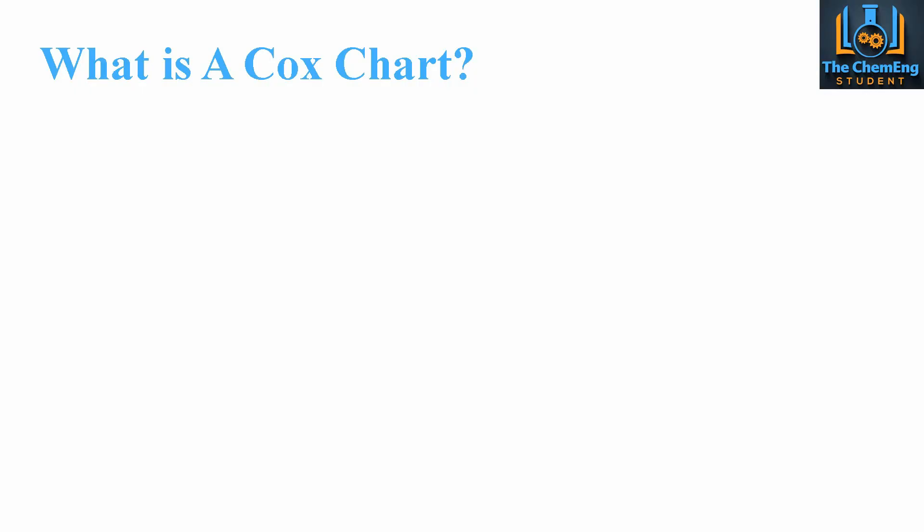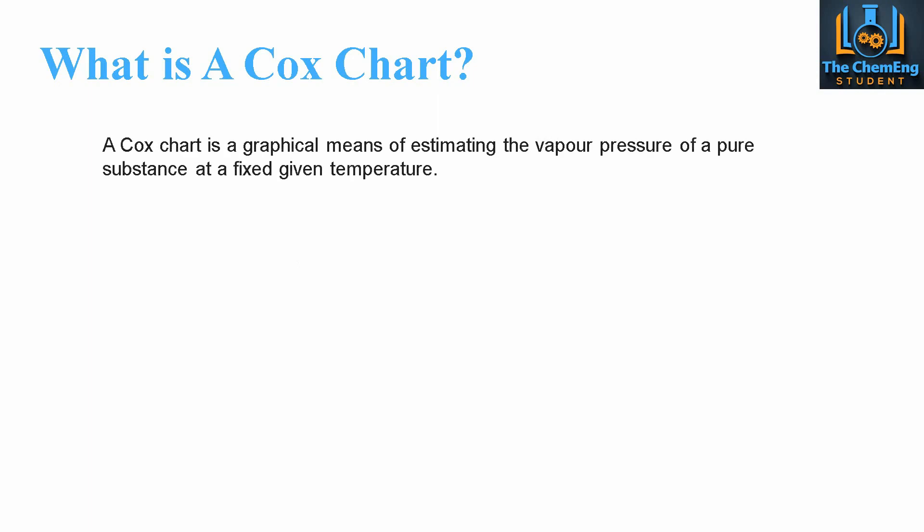So the question here is: what is a Cox chart? In essence, a Cox chart is a graphical means of estimating the vapour pressure of a pure substance at a fixed given temperature. It's very important that we highlight the key words here. The first key word is 'estimate' — any chart or figure will not give you a precise determination of that value, because there will be an element of human error and error within the graph itself. So when we use a Cox chart, it's a means of estimating. Make sure that when you're quoting these values you remember it's an estimate, not a fixed guaranteed 100% value.